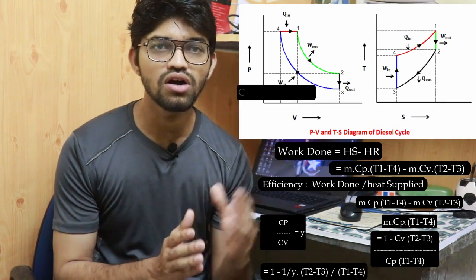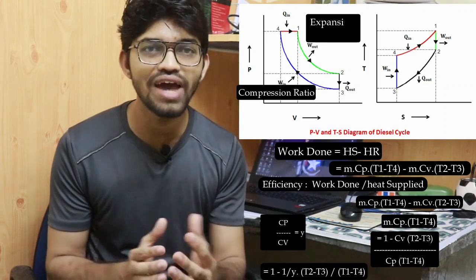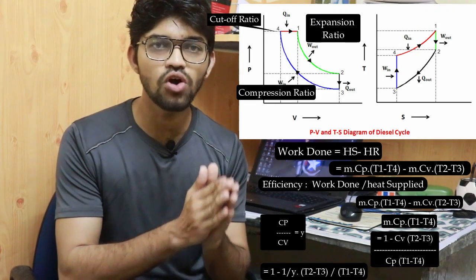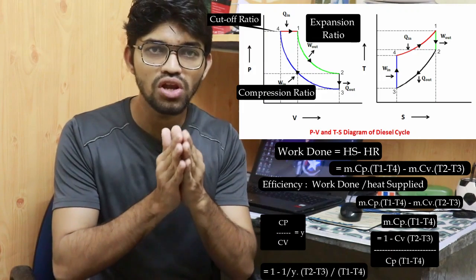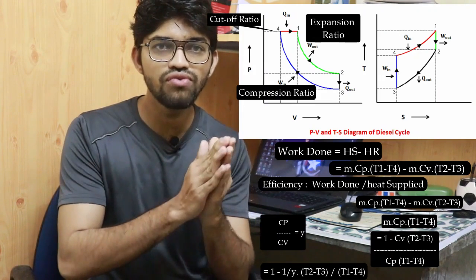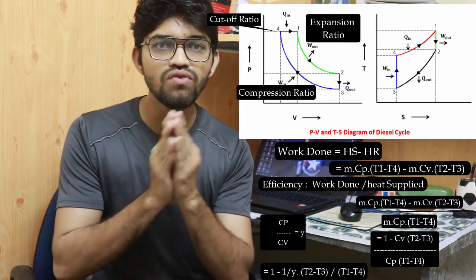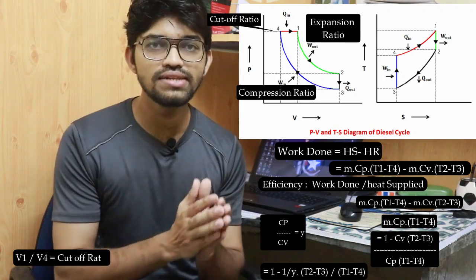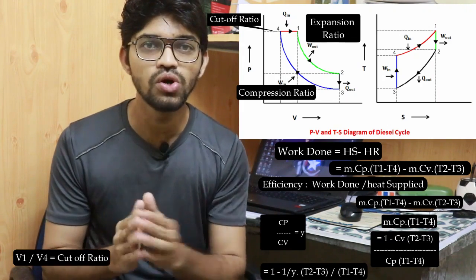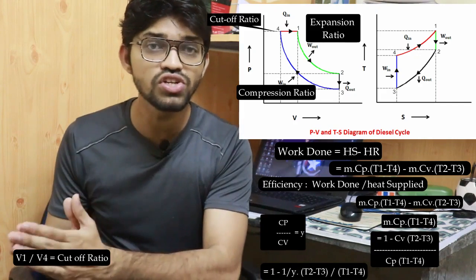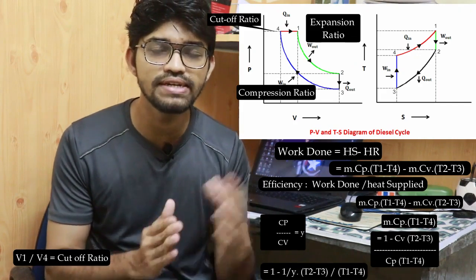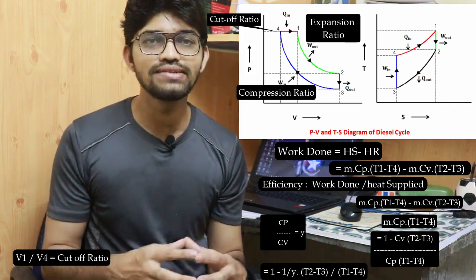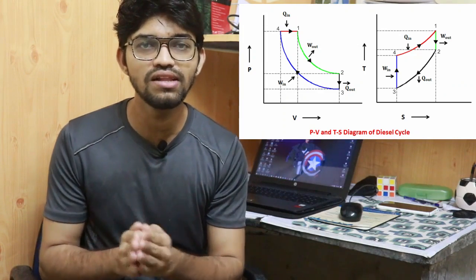In the diesel cycle we have the compression ratio, expansion ratio, and also the cutoff ratio. During the constant pressure heat addition process four to one, the cutoff ratio is defined as V1/V4. If we decrease the cutoff ratio, the efficiency of the diesel cycle increases.